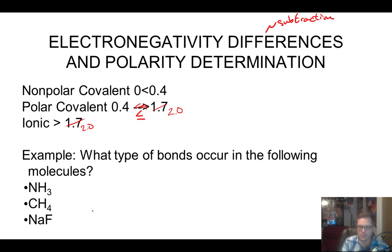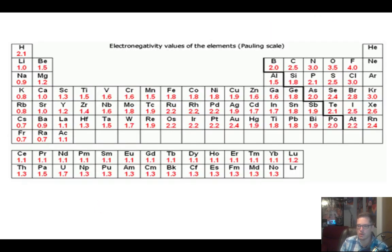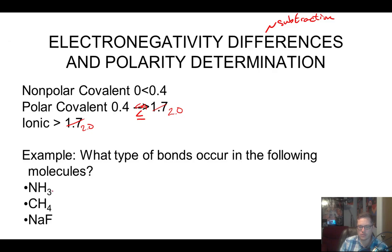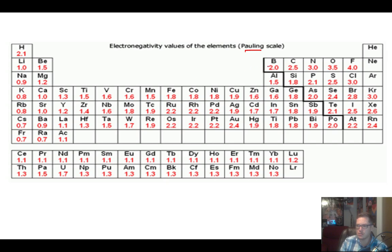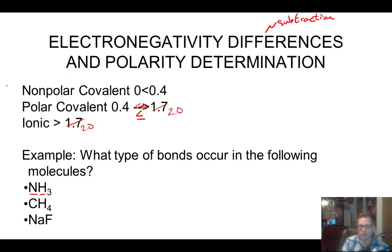So where do we get these numbers? You'll have in your note packet this table — the Pauling scale — of all the electronegativity values for different elements. You just find the elements and subtract the bigger one minus the smaller one. So here we've got nitrogen and hydrogen. We take the value for nitrogen, which is 3.0, and the value of hydrogen, which is 2.1. So 3.0 minus 2.1 gives us a difference of 0.9. That falls between 0.4 and 1.7, so this would be a polar covalent bond.